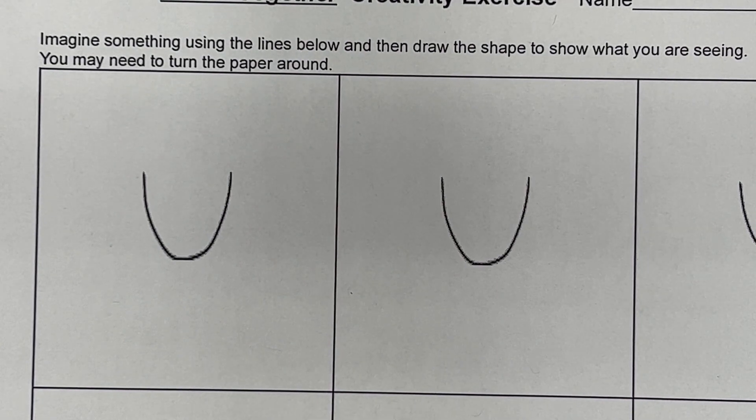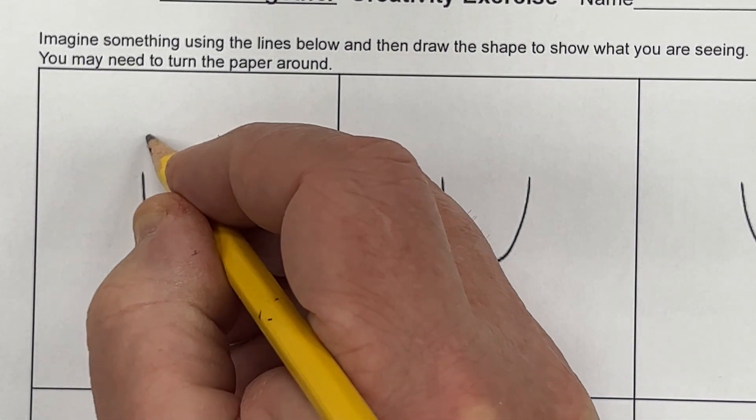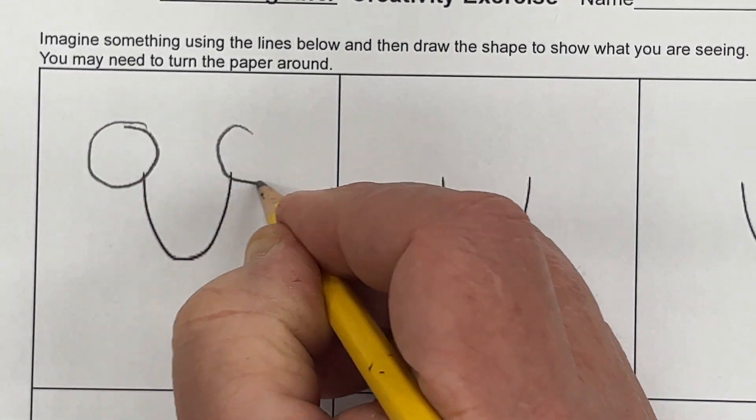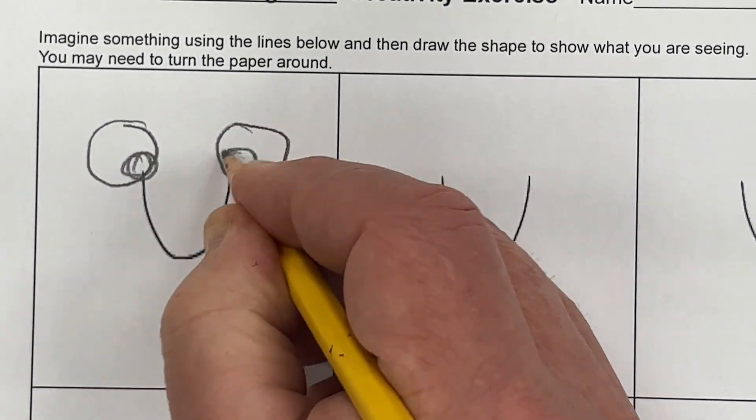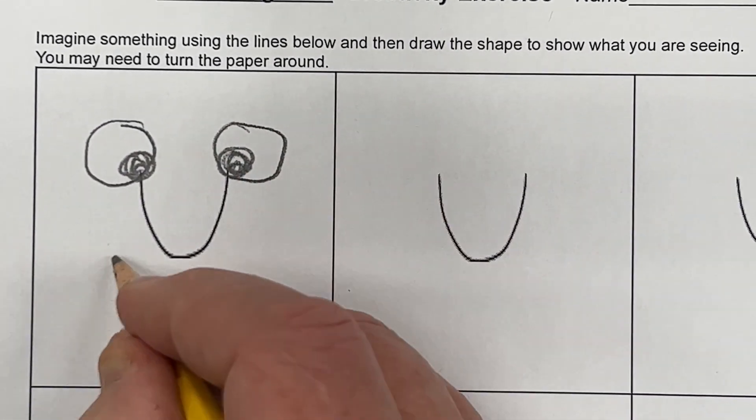There are a lot of ways to imagine what this U shape might be. One person might see it as a face, draw some big eyes, big smile.